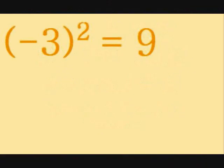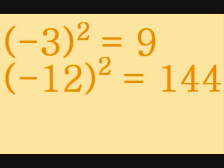At school, you are probably told that when you square any number, the result is positive, even if your original number is negative. For example, the square of minus 3 is 9, and the square of minus 12 is 144.